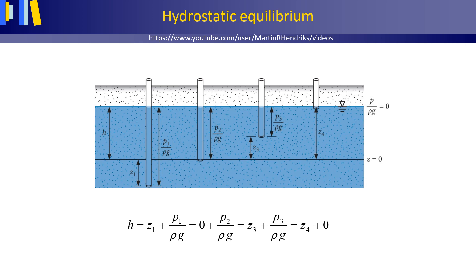Hydrostatic equilibrium. Here we have a cross-section of the subsurface. Unconfined groundwater is groundwater where the water table, indicated with this sign, can establish itself freely. It is therefore also called phreatic groundwater, phreatic meaning free. This figure shows us the hydraulic head, elevation head, and pressure head for a number of pitometers with their screens at different depths. We have a no-water-flow situation because the hydraulic heads for all these pitometers are the same, and we call this hydrostatic equilibrium.